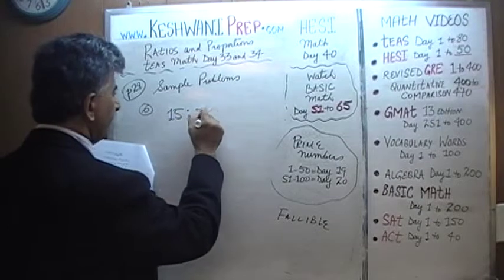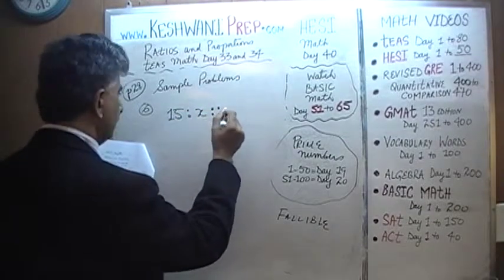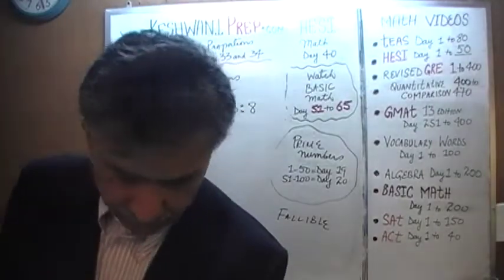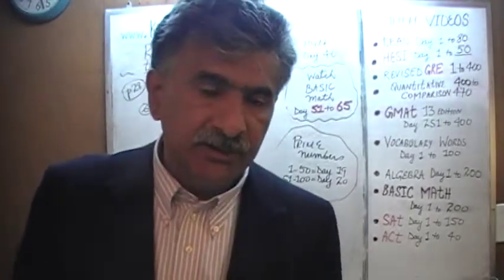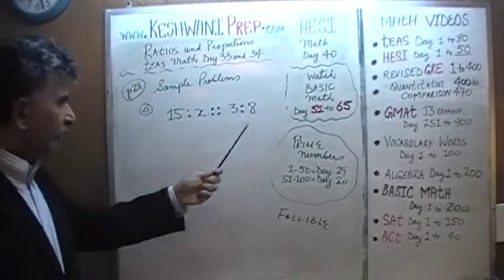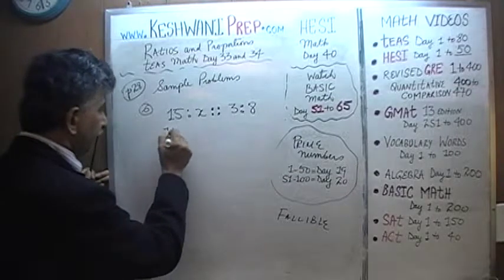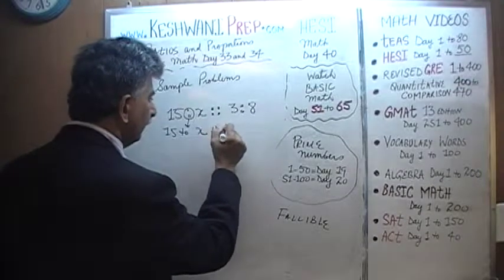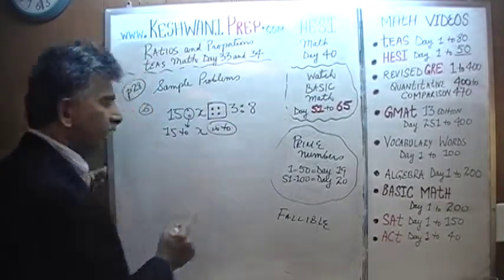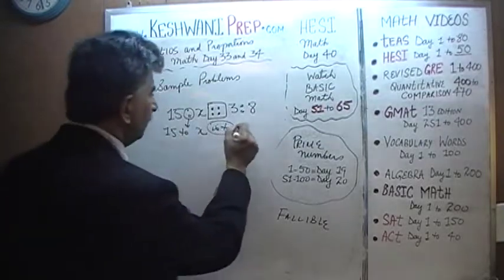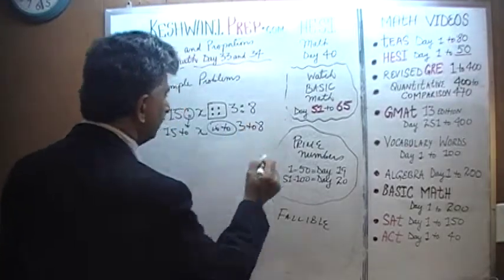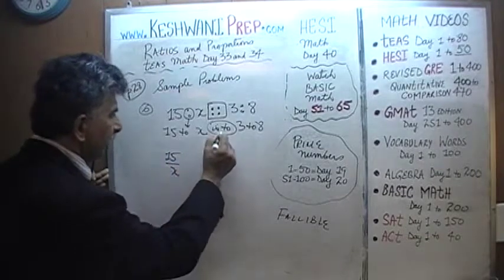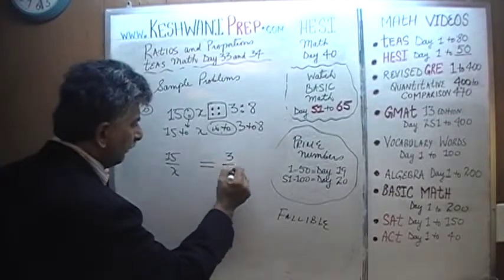Number 6. We have 15 to x is to 2, 3 to 8. That's how it is read — we learned that the day before yesterday. This statement is read as: 15 to x, this thing is 2 — the four dots are read as 'is to' — 3 to 8.